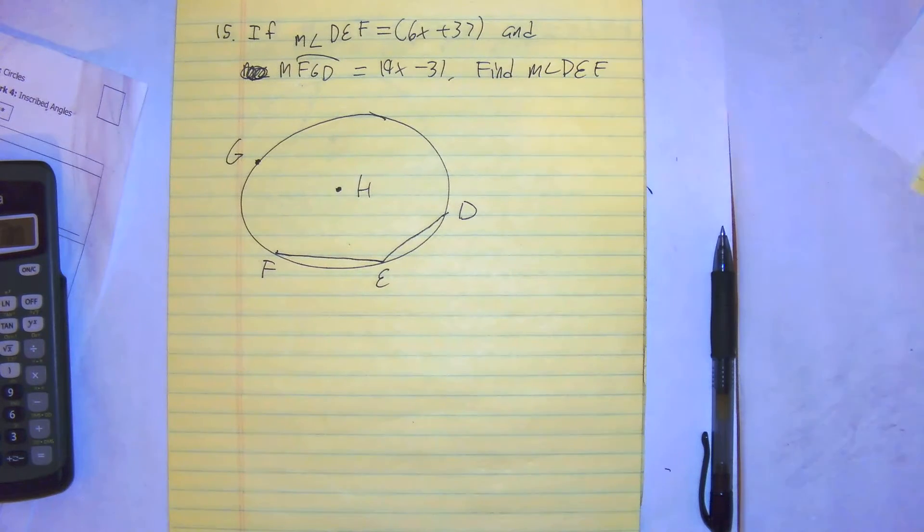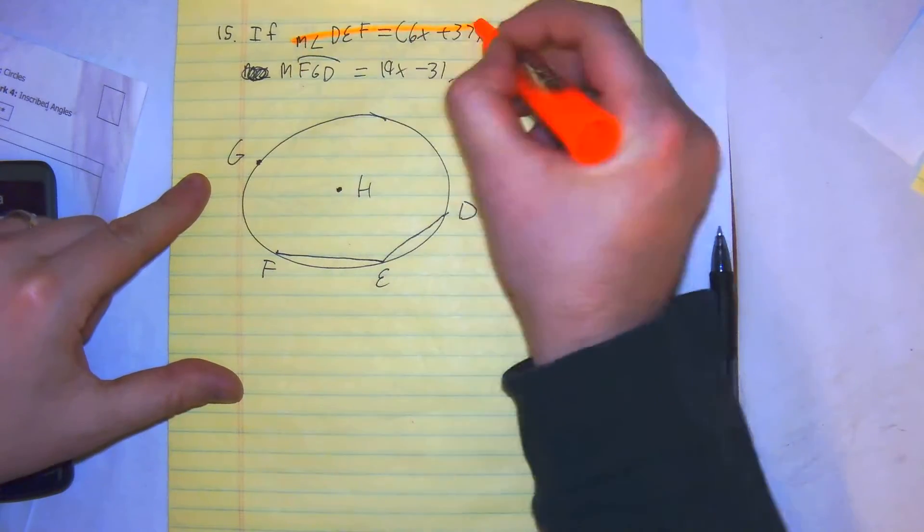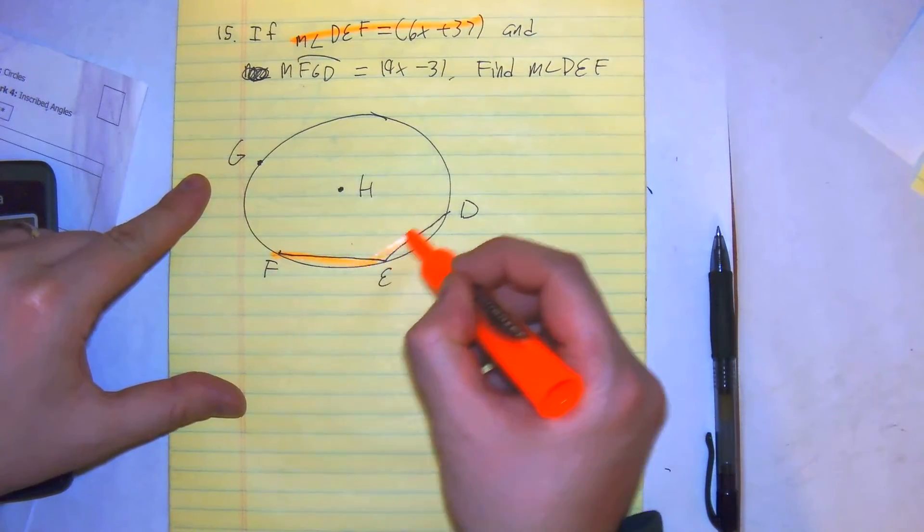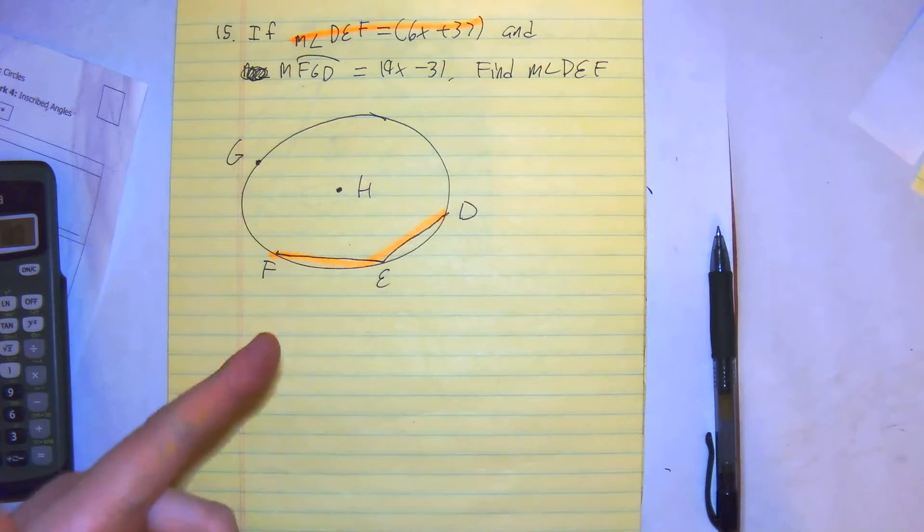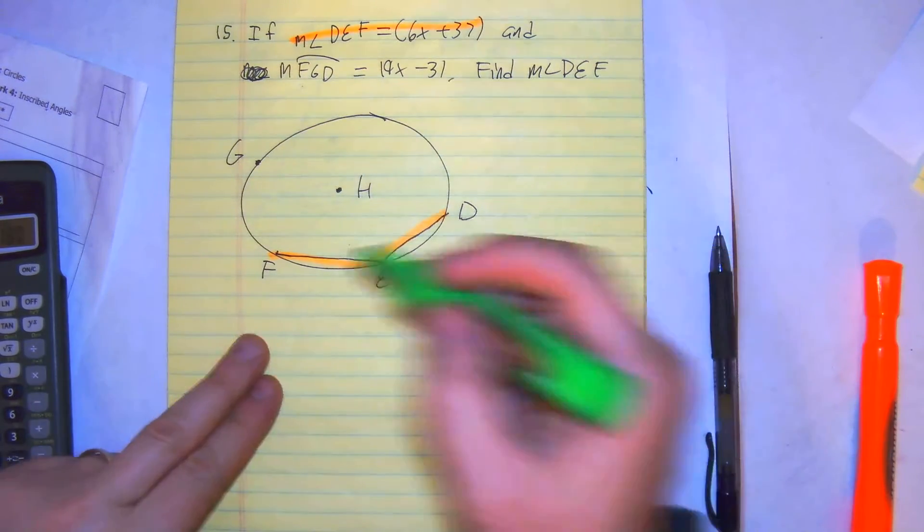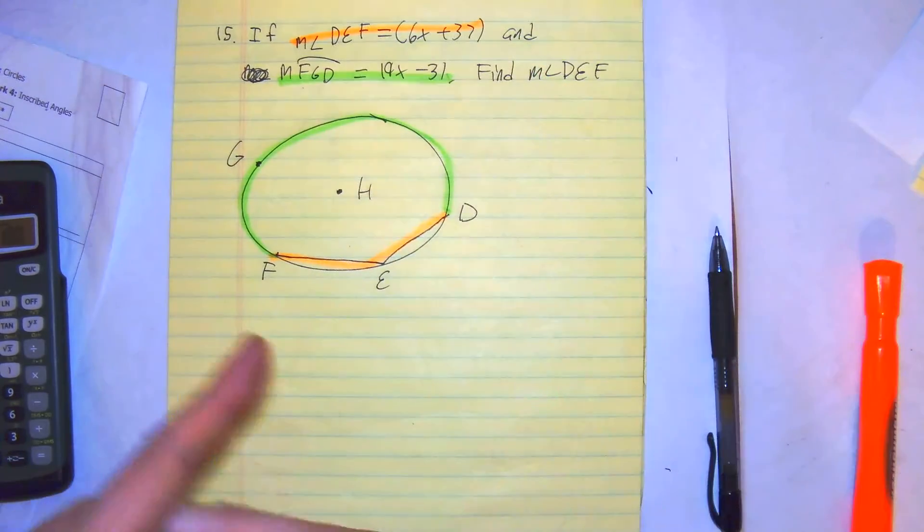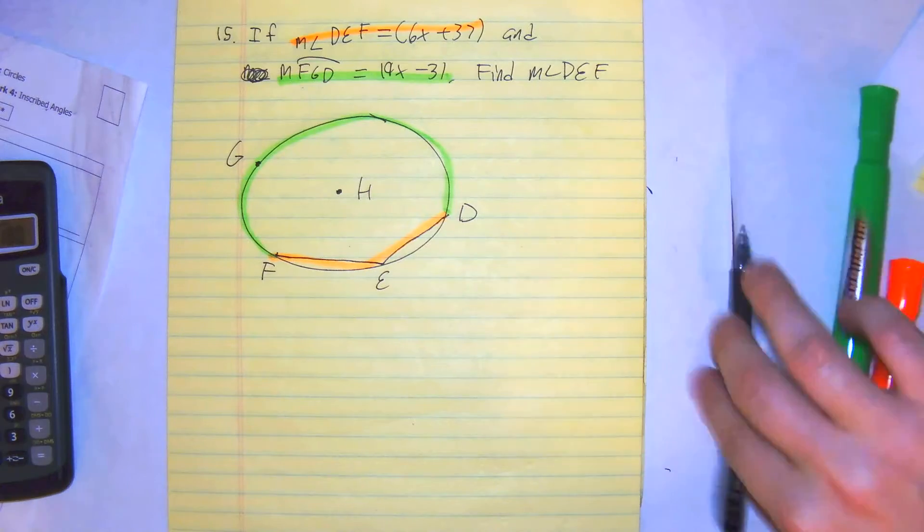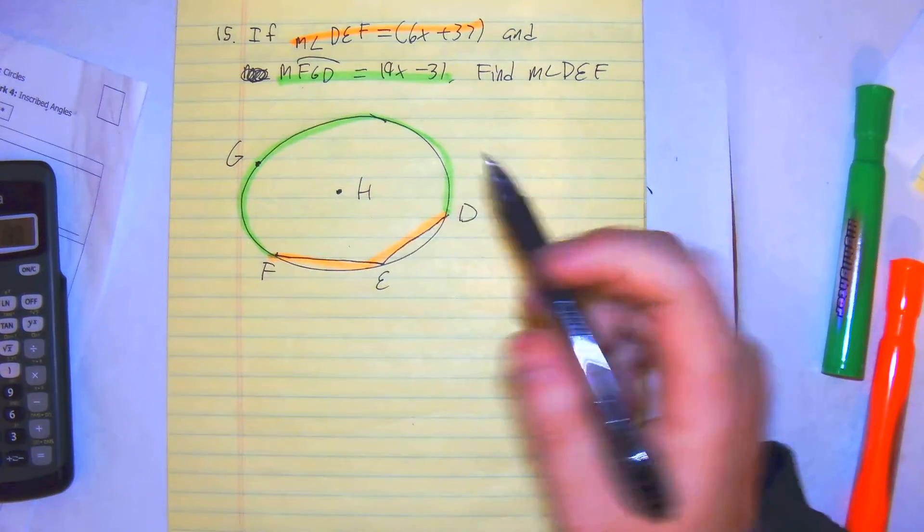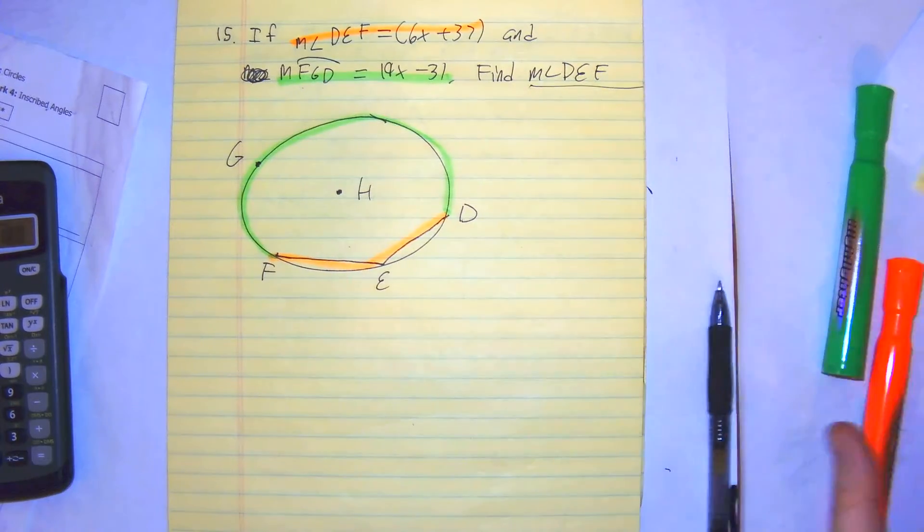We're looking at number 15. What we have here is the measure of DEF, which is 6x plus 37, and the measure of FGD, which is 19x minus 31. We want to find the measure of DEF. So we have to not only find the value of x, but we want to find the measure of DEF.